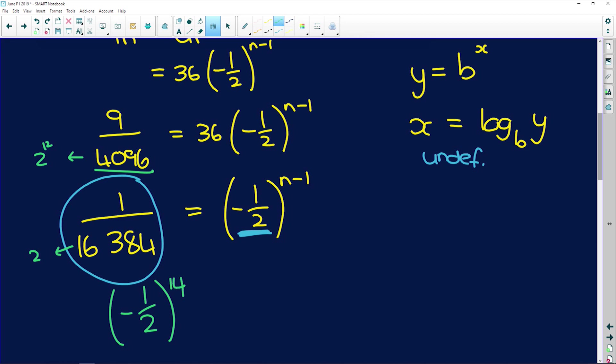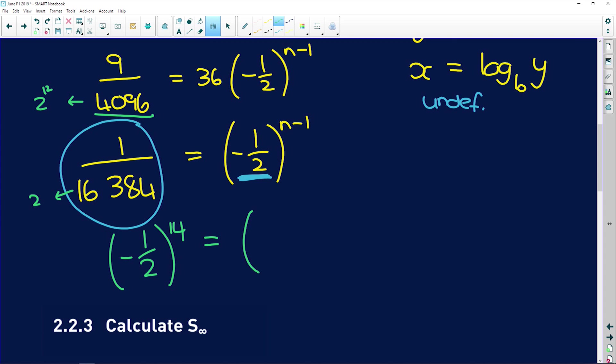And that's equal to negative 1 half to the power of n minus 1. So now that I've expressed both of these things in terms of the same base, if negative 1 half raised to the power of 14 is equal to negative 1 half raised to the power of n minus 1, that means that 14 is equal to n minus 1, and therefore n is equal to 15.